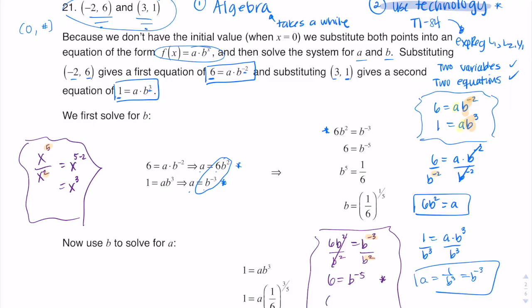I can rewrite this as six equals one over b to the fifth. If I solve for b to the fifth, I get b to the fifth equaling one sixth. Then I take the fifth root to solve for that base value — that's how I'm getting my b value. I've gotten one variable solved for. Now I can substitute this b value into one of my original equations.